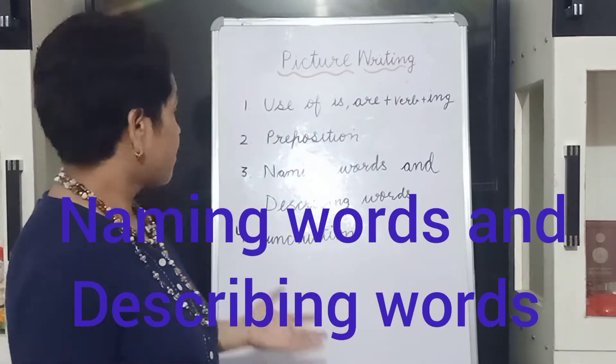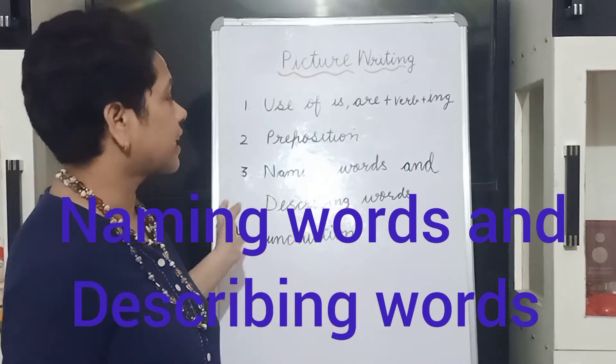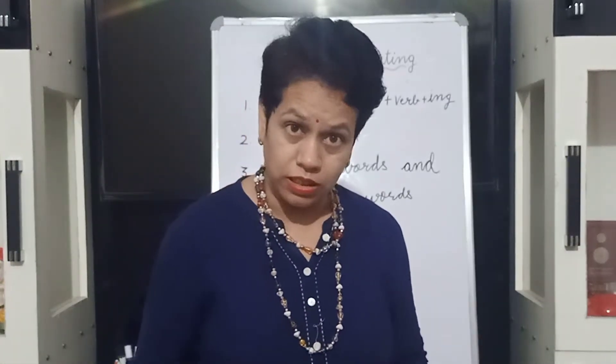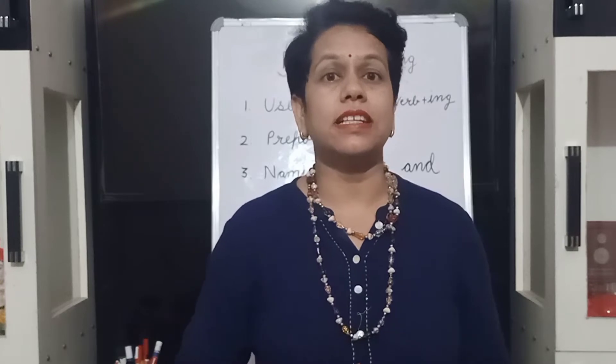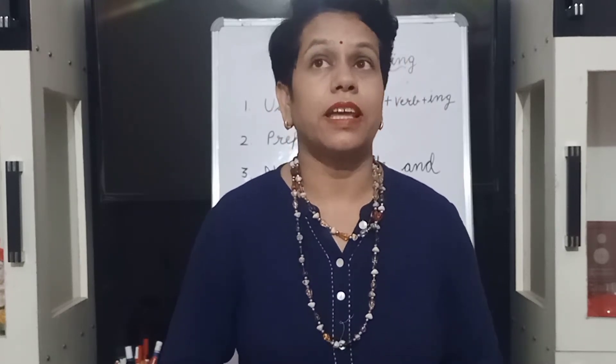The next rule is naming words and describing words. Naming words means noun — use lots of nouns. Whatever you see in the picture, like boy, girl, person, place, animal, things. And describing words means you have to describe. Suppose 'a girl is wearing a red frock' — here 'red' is a describing word. Then 'she has brown hair.'